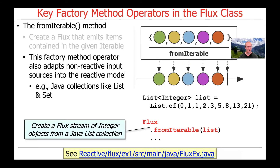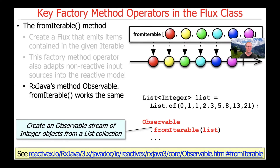As with the just method, this factory method is commonly used to adapt non-reactive input sources into the reactive model. Most commonly, this is used to adapt Java collections like List or Set. As we show here, we're taking a list which has a bunch of integers in it, and then we're creating a Flux stream using that list as input.